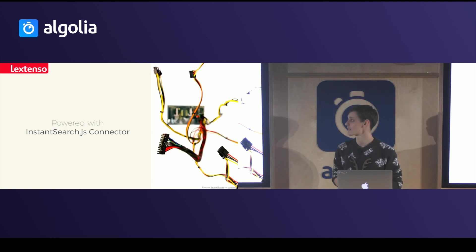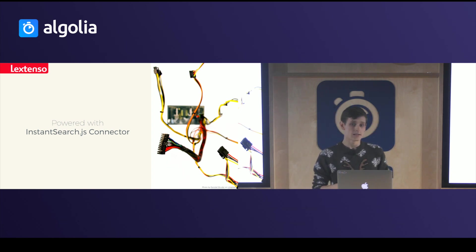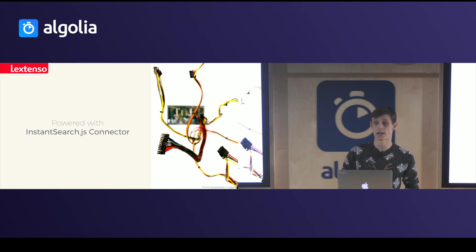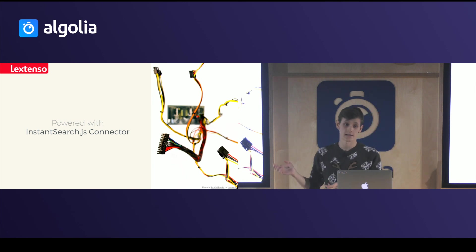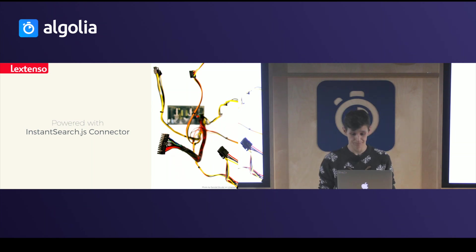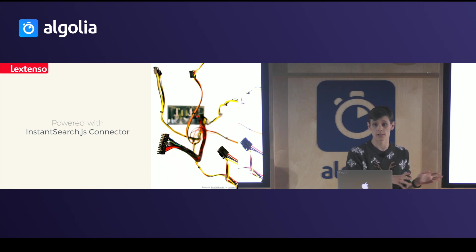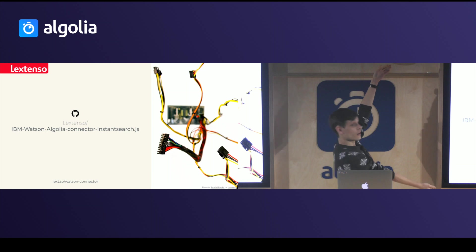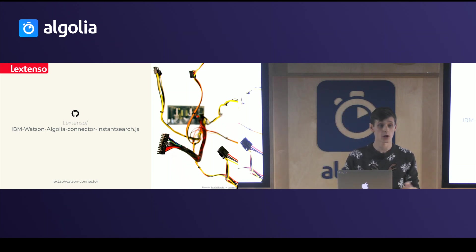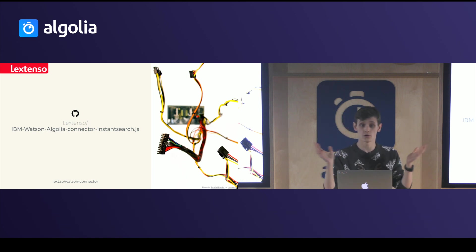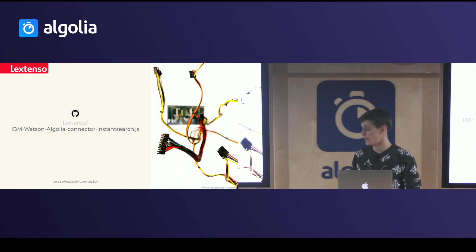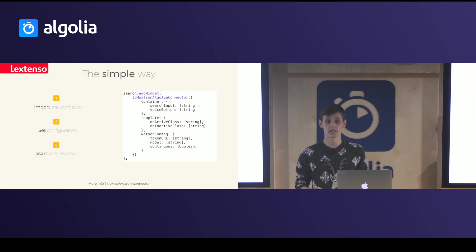We started with an InstantSearch.js connector. This provides the possibility to extend your actual widget, making it really simple to act on search. When you receive results from Watson, you can just ask the connector to refine the query — simple as that. Basically, it is a very tiny connector between IBM Watson and Algolia, kind of a middleware. You can find it on GitHub — it is open source and open to the community. If you want to push something or do pull requests, just check it out. It is at lex.so/watson-connector.